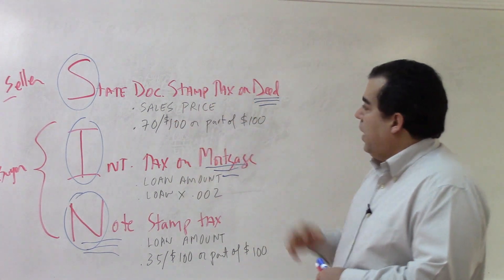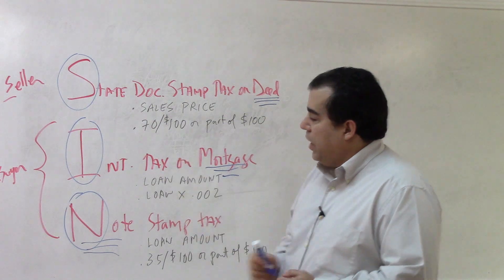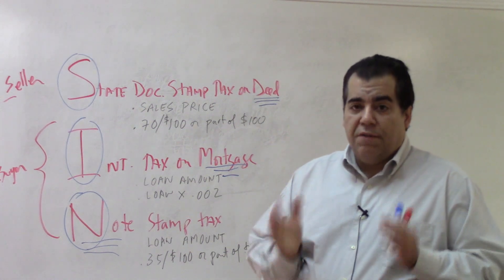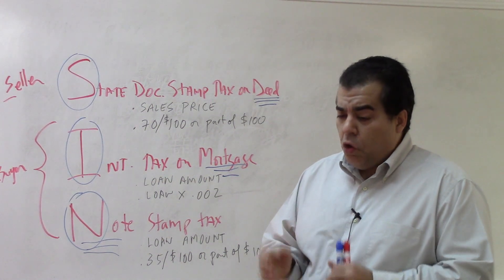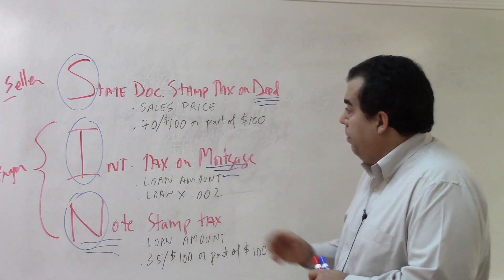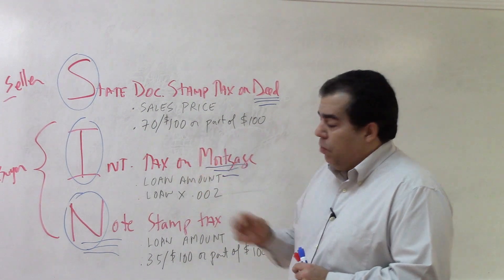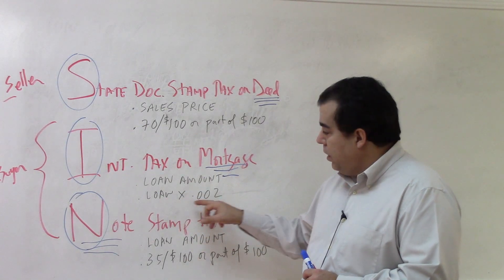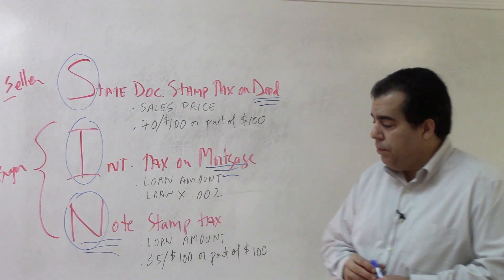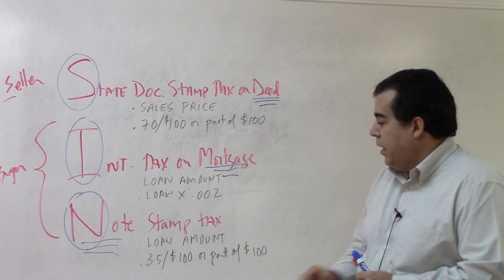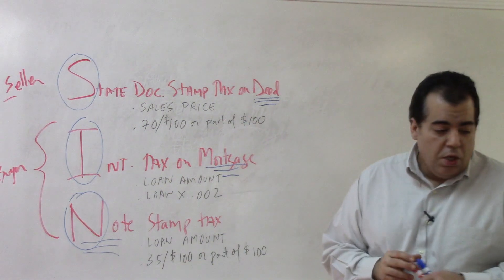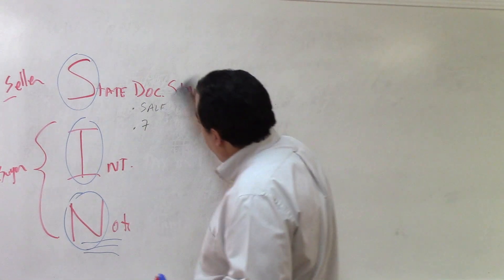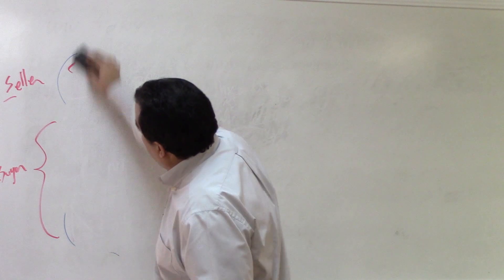The state documentary stamp tax on the deed is 70 cents on every $100 or part of $100 of the sales price. The intangible tax on the mortgage is the loan amount multiplied by 0.002. The note stamp tax is 35 cents on every $100 or part of $100 of the loan amount.